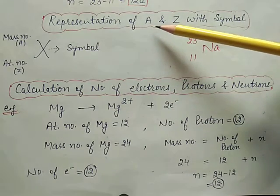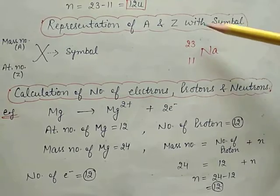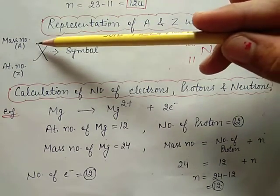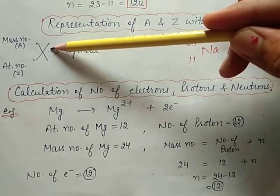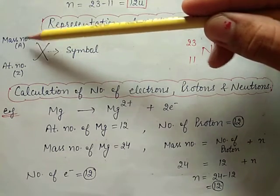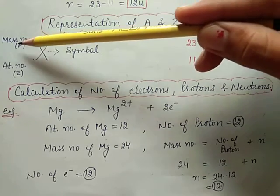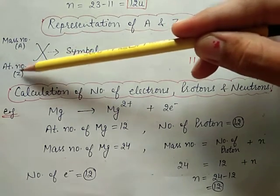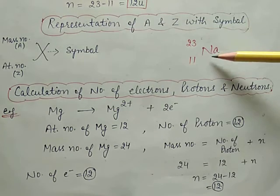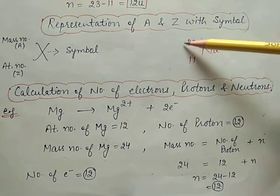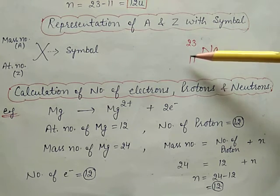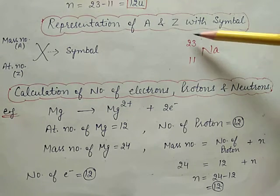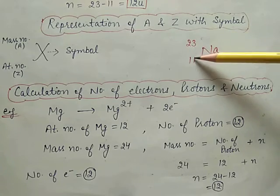How is the representation of A and Z done with the symbol? Mass number A is written on the upper side and atomic number Z is written on the lower side of the element symbol X. For example, for sodium, mass number 23 is written on the upper side and atomic number 11 is written on the lower side.